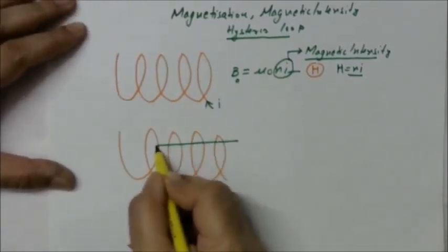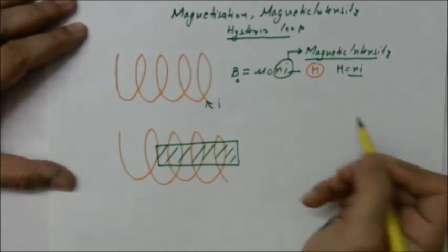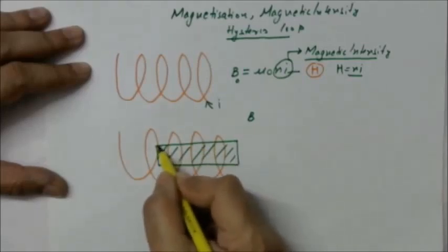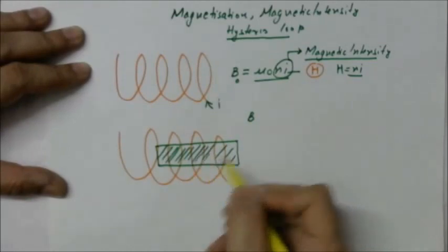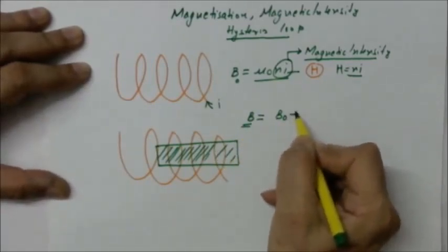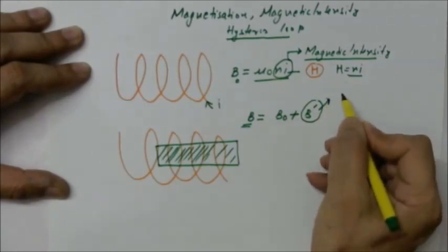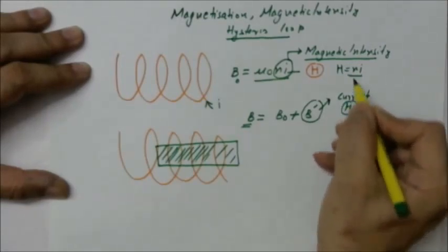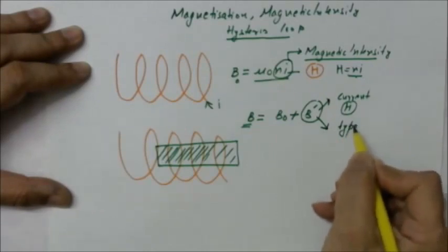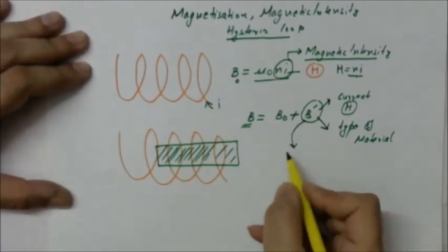Now take a case when we place a material inside the solenoid. The magnetic field because of this material will change. Earlier there was a magnetic field B₀, but now it will change and become B new, which equals B₀ plus B dash. This B dash is dependent on the current, which is H, and also the type of material. We call this the intensity of magnetization.